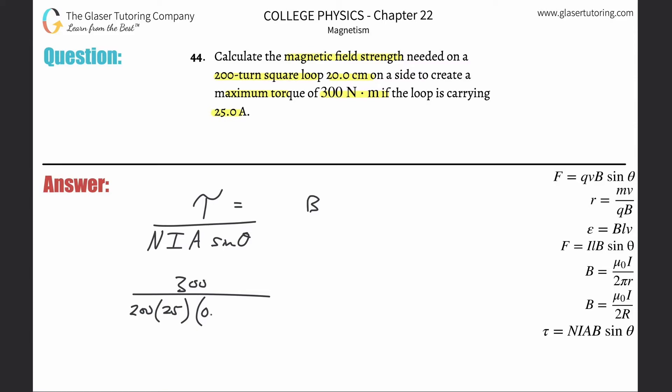And remember though, you need that in meters, so it's really 0.2. You're going to square that. And then what's the angle? Well, it's 90 degrees. Why is it 90? Check out number 42.